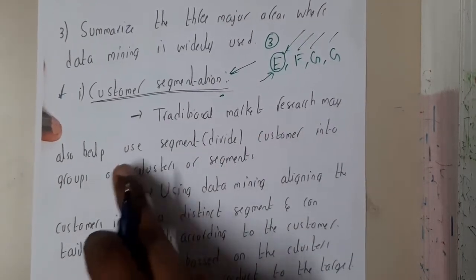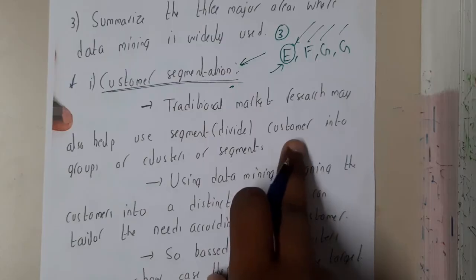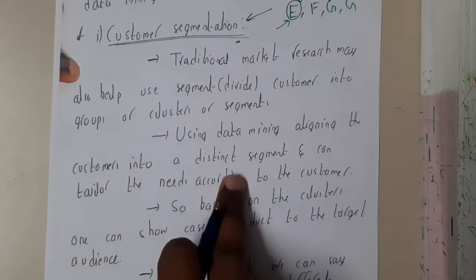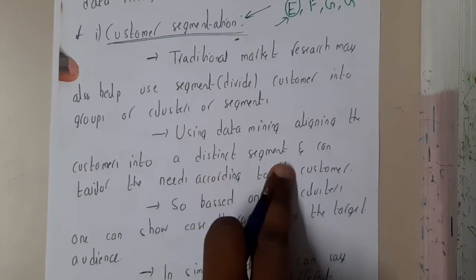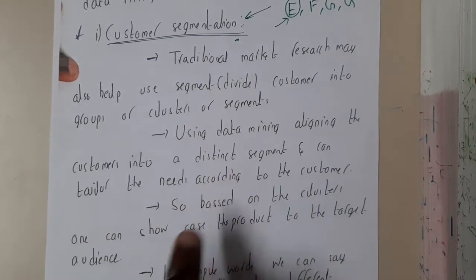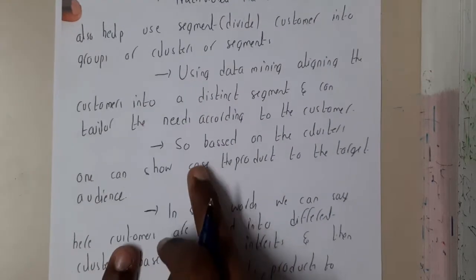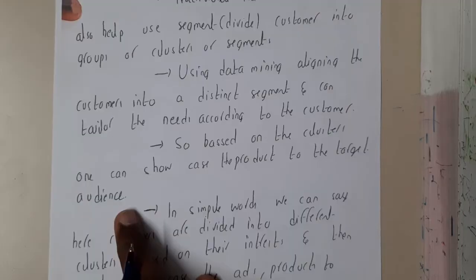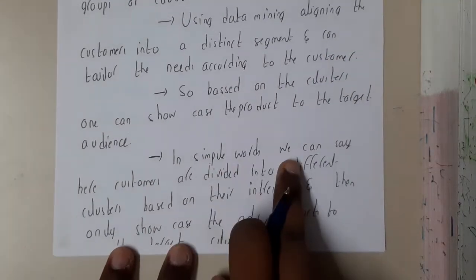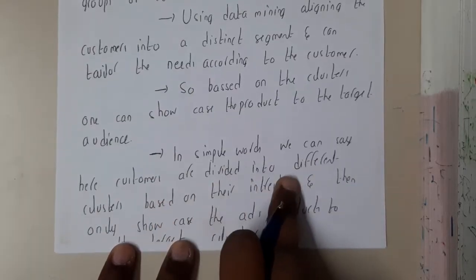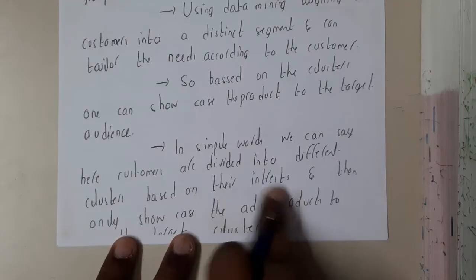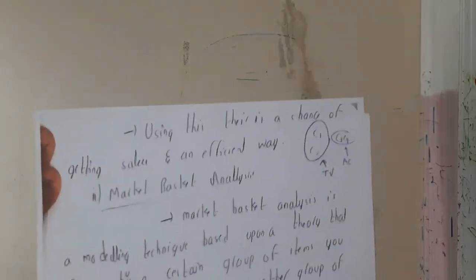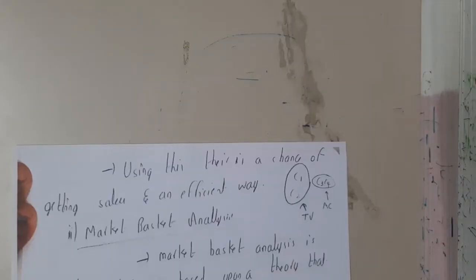Traditional market research may also help us do segmentation — dividing customers into groups, clusters, or segments. Using data mining, customers are aligned into distinct segments and needs can be tailored accordingly. Based on a cluster, you can showcase products only to the target audience. In simple words, customers are divided into different clusters and based on their interests, messages and operations are sent — you are not spamming everyone. For example, some customers are buying ACs and TVs, and you target them accordingly.